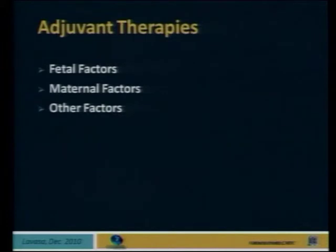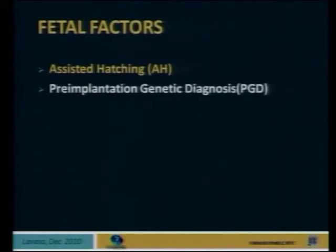Adjuvant therapies have been divided into three parts: fetal factors, maternal factors, and other factors. In the fetal factors we have two main approaches: one is assisted hatching, and the other is pre-implantation genetic diagnosis.